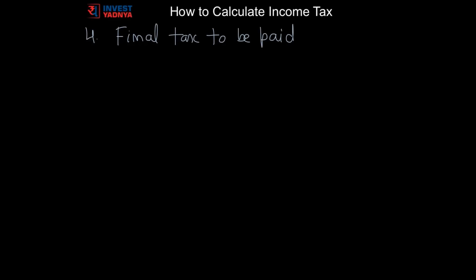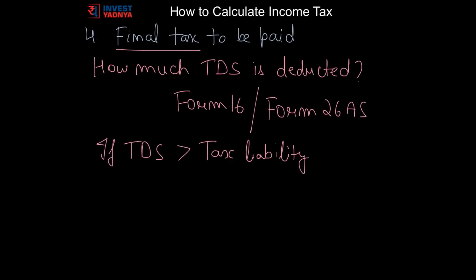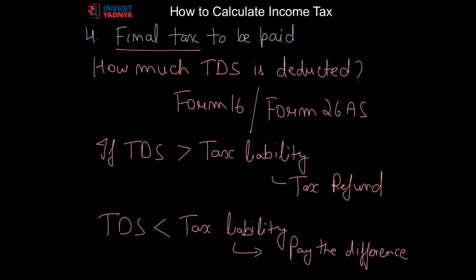Now final step is to know how much TDS you have paid and determining final tax to be paid. TDS amount deducted can be checked in your form 16 or form 26 AS. If total TDS paid is more than your tax liability calculated before, then you can apply for tax refund during return filing. And if TDS is lower, then difference need to be paid while filing the returns.